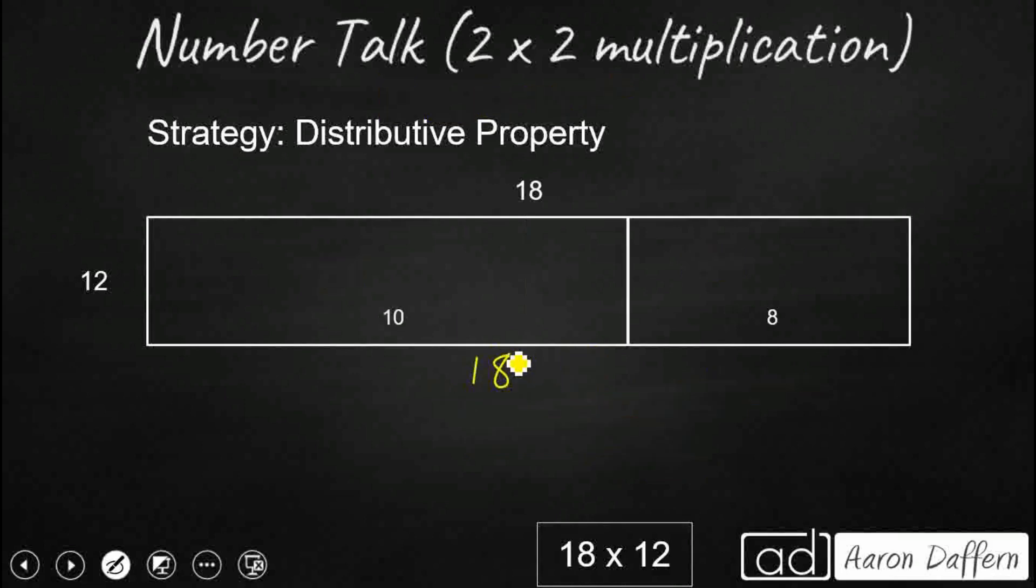Another way we could have done it is we could have taken our 18 and instead of breaking it apart in half, 9 and 9, let's look at it as expanded form. Place value, 10 plus 8. Now we're still going to multiply that 12 by both of those addends to get our partial products. So what we're going to get here is our 10 times 12.